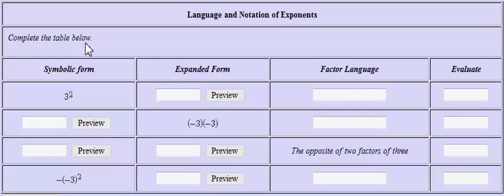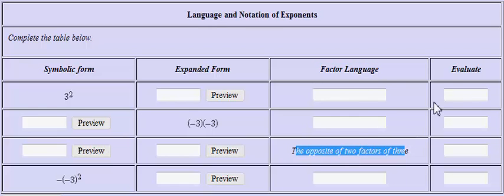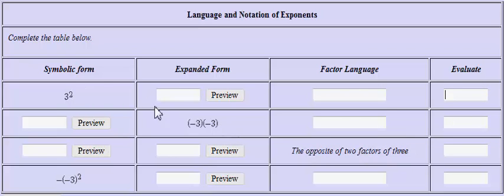In this problem, we are to complete the table below. In the first row, they give me a problem in symbolic form, and I am to transform that into expanded form, and then write a sentence regarding factor language, which I'll explain in a minute. Finally, I am to evaluate the problem. In other problems, rather than giving me the symbolic form, they may give me either the expanded form or the factor language and have me fill out the other three blanks.